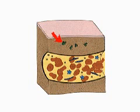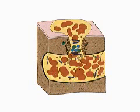Tissue clotting factors lie trapped within cells surrounding each blood vessel. When an injury occurs, blood escapes from the broken vessel. Platelets aggregate at the site and partially plug the break. Tissue clotting factors are released.